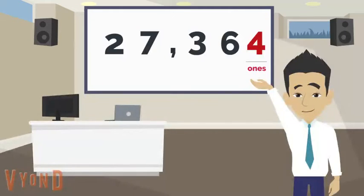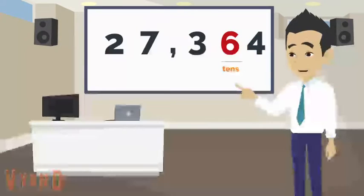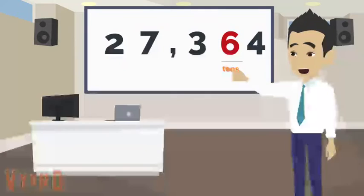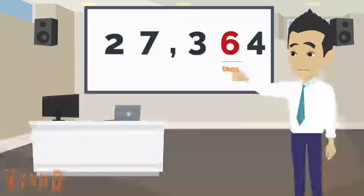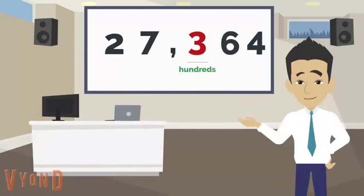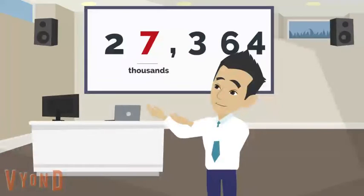If the underlined digit is 6, what is its place value? The answer is tens. If the underlined digit is 3, what is its place value? The answer is hundreds.